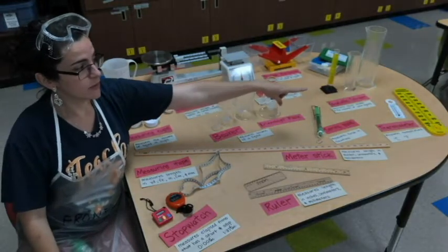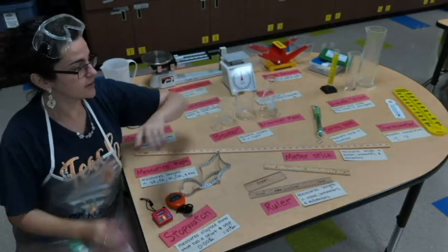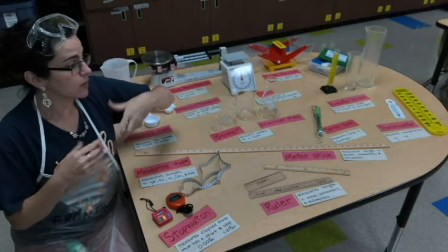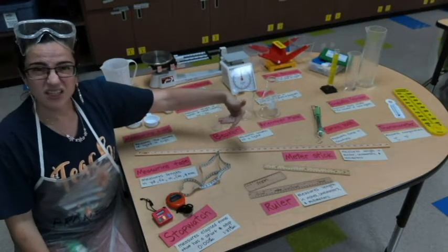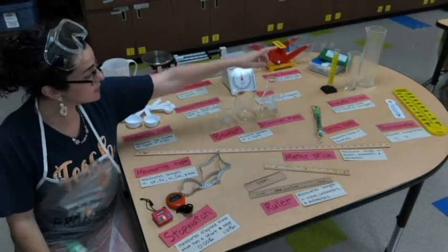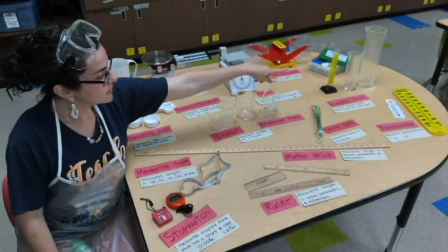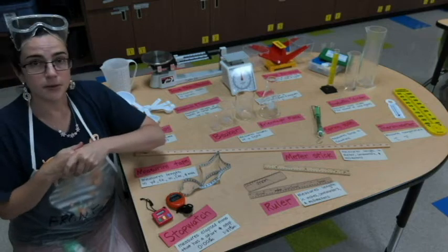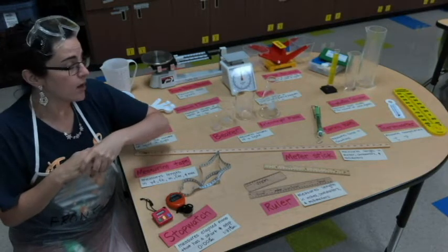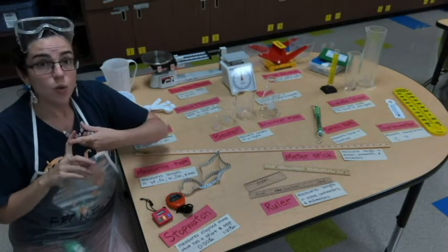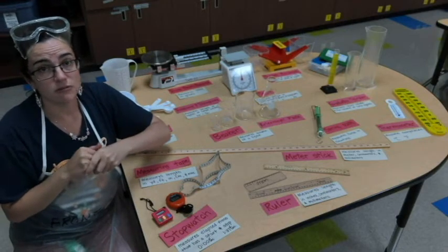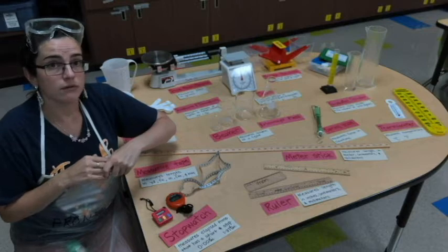We have thermometers on the other side of the table. Those help us measure temperature in either Celsius or Fahrenheit, or graduated cylinders. They can help us measure volume in either liquids or by placing something in there and doing some calculations to measure the volume of solids.